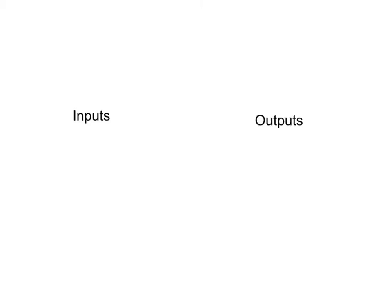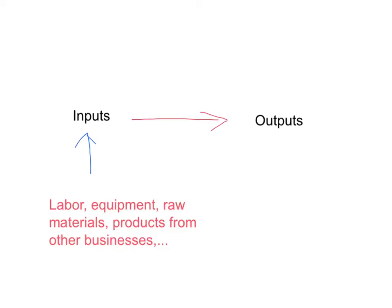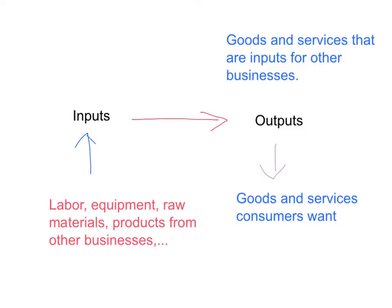We're going to take a simple but general approach to a business. A business is simply an organization that takes some inputs and transforms those inputs into outputs. The inputs may include labor, equipment, raw materials such as iron ore, and products from other businesses such as steel. The outputs could be goods and services that consumers want, or goods and services that become inputs for other businesses — for example, a steel mill takes iron ore as an input and produces steel used as an input for a car manufacturer.